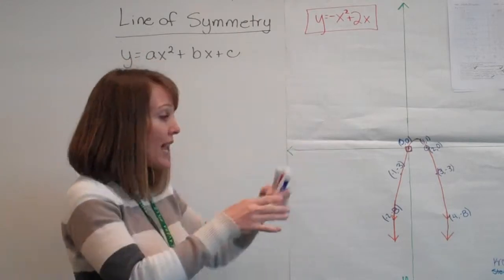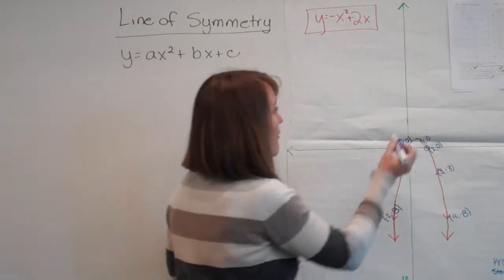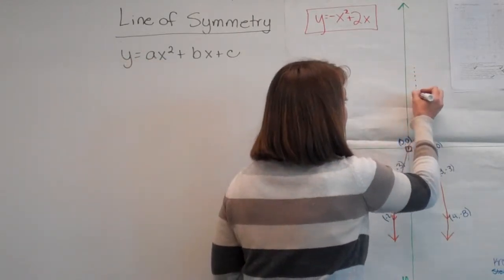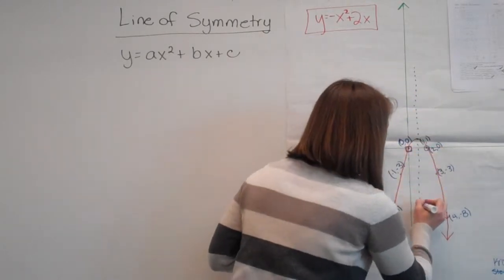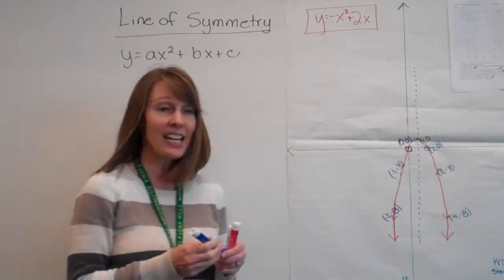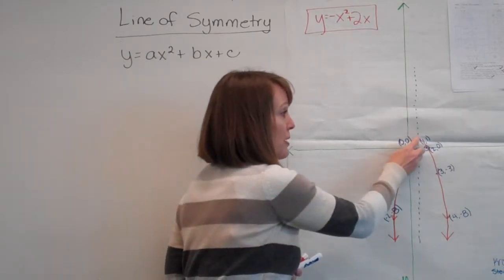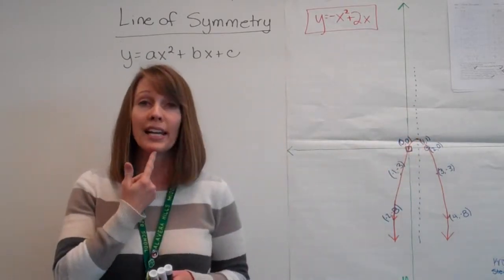So you can see here, once we actually graph it, we have a line of symmetry, a line that we can put right down here, right through the center of the graph that's going to cut it in half, and going through that would be our vertex, the turning point, like our chin.